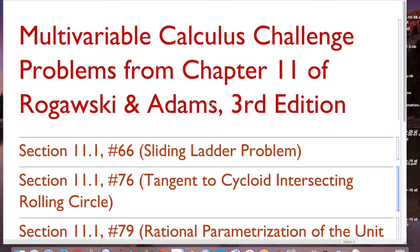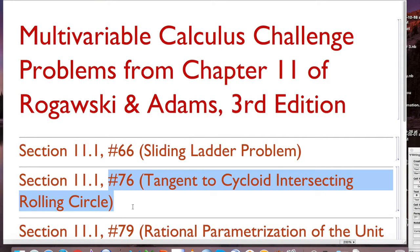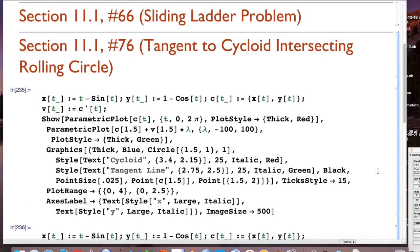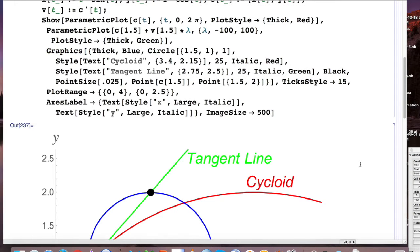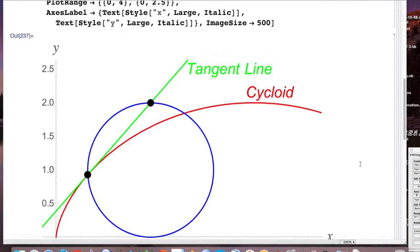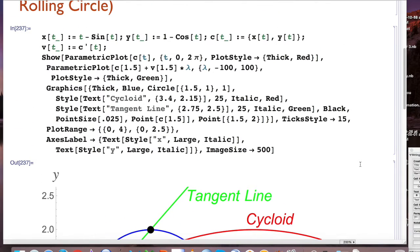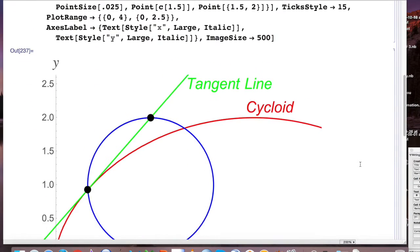So this is my Mathematica notebook where I'm going to make pictures and animations related to problems that we're solving. We're doing problem 76 from section 11.1, tangent to a cycloid intersecting the rolling circle at the top. You don't have to know Mathematica code or even want to learn it unless you're interested. But we are going to see that this generates, first of all, the static picture that was on the piece of paper that I just showed you.